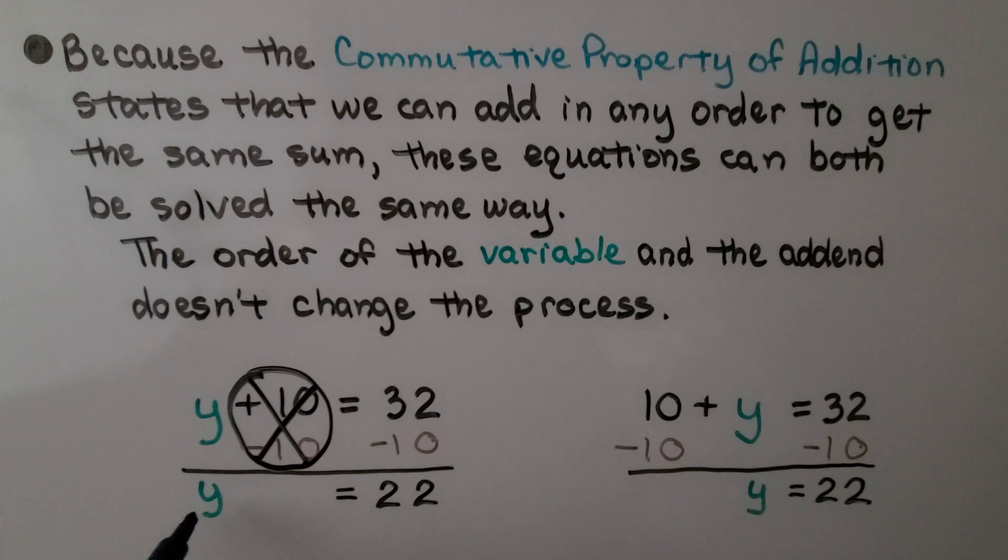Now we have only got y on this side, but we need to take 10 away from this side, we get 22. We can see that y is equal to 22. And even if the 10 is written first, we are still going to create a zero pair by subtracting 10 from both sides of the equal sign, and we get that y is equal to 22.